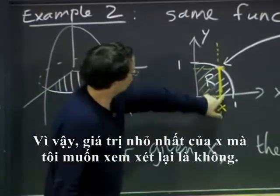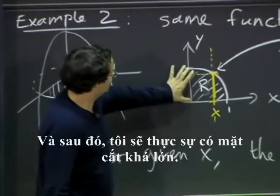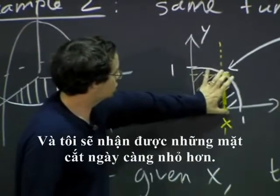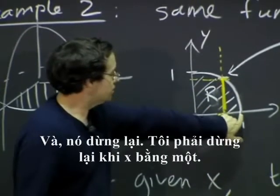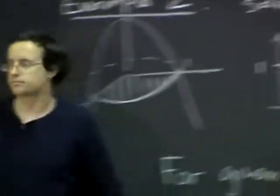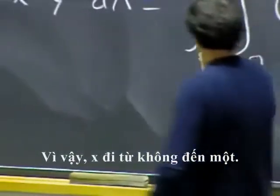The smallest value of x that I want to consider is zero again. And then I will actually have a pretty big slice, and I will get smaller and smaller and smaller slices, and I have to stop when x equals one. Afterwards, there is nothing else to integrate.